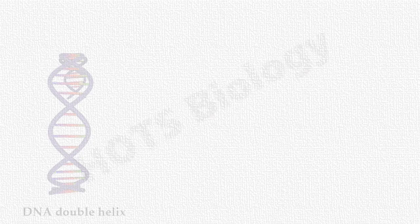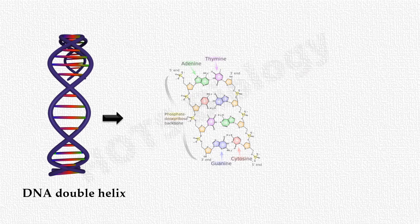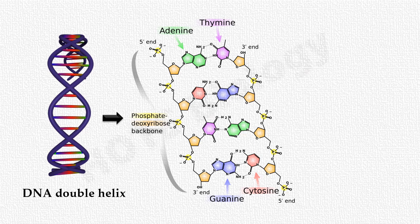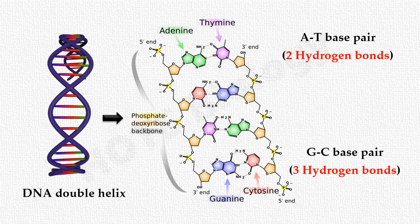We all know that DNA is a double-stranded molecule. It is stabilized by chemical interactions. The most important of these interactions is the hydrogen bonds. Adenine always pairs with thymine via two hydrogen bonds, and cytosine always pairs with guanine via three hydrogen bonds.